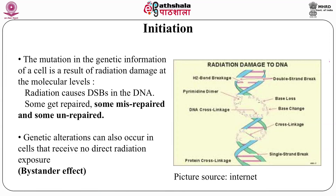Genetic alteration can also occur in cells that receive no direct radiation exposure. This effect is known as the bystander effect. It is not just the cells getting direct radiation that are affected — cells in the vicinity of directly irradiated cells are also affected due to signaling between cells. This effect is known as the bystander effect.